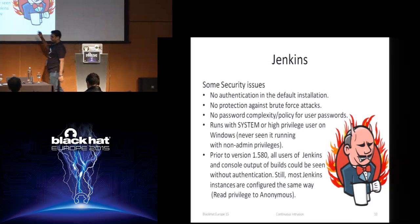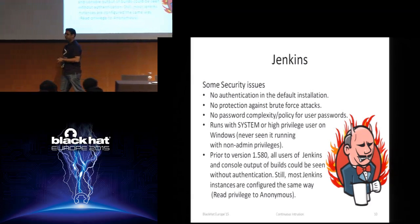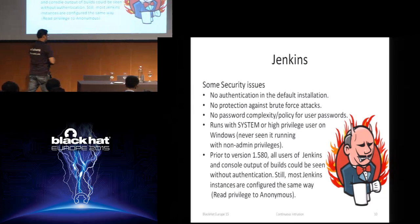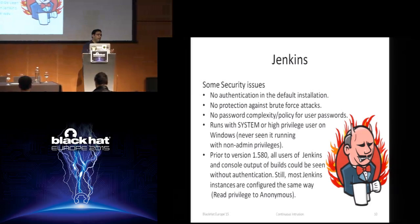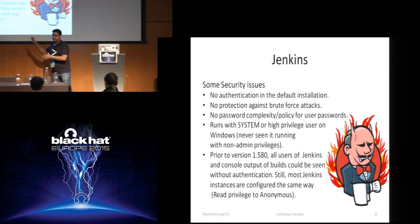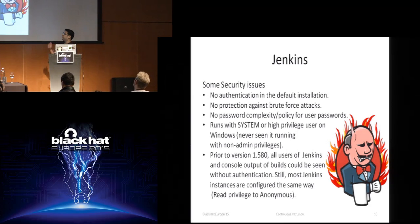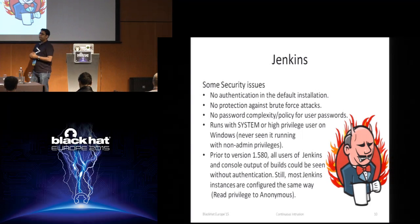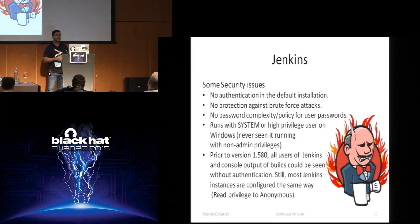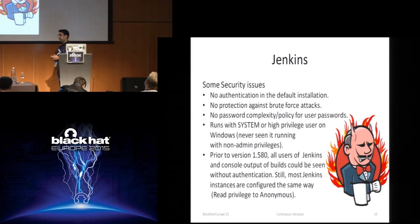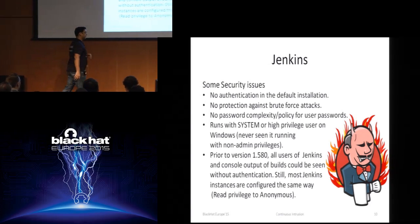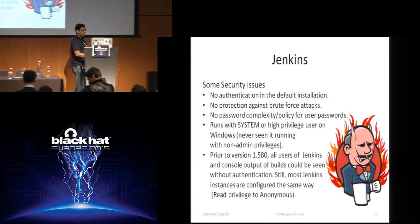On Windows machines, Jenkins runs with system privileges. You will always find nodes or slaves on Windows machines — developers have slaves or agents of this tool on their machines, so you have at least 10 to 20% of Windows machines in a Jenkins distributed network. And prior to version 1.580, any anonymous user could see build outputs and list users present on the Jenkins machine. Even now, on publicly available instances, if they have upgraded to the latest versions, they still keep it the same.